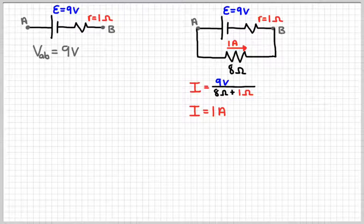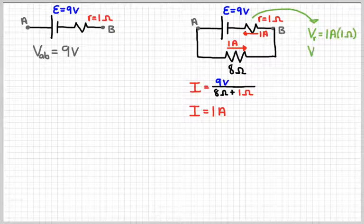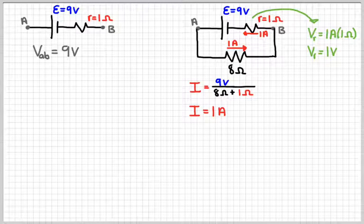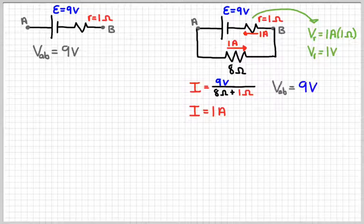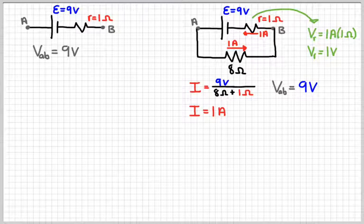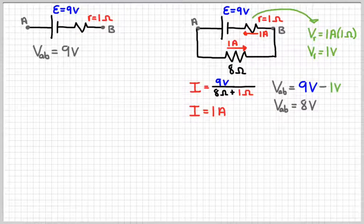So 1 amp through the 8 ohm resistor, that's also 1 amp through that little resistor r. And so the voltage across that little resistor would be 1 volt, just using Ohm's law again.